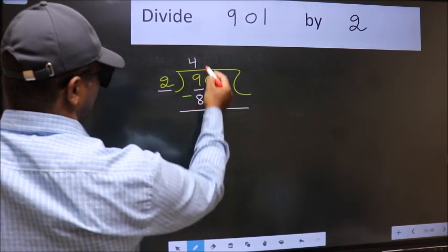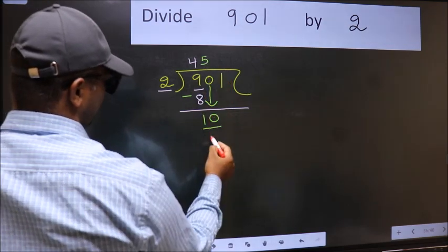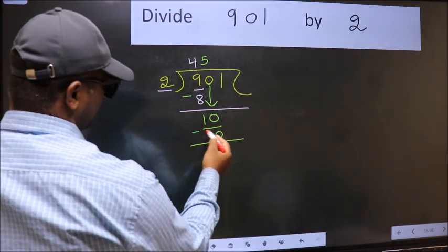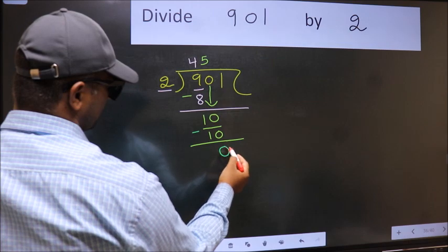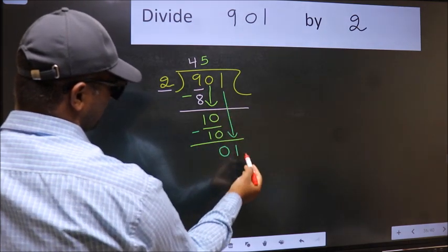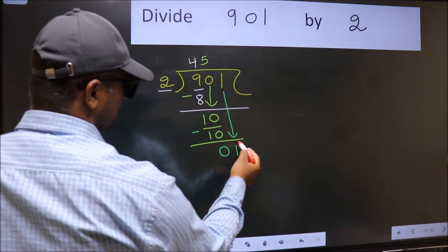When do we get 10 in 2 table? 2 fives, 10. Now we should subtract. 10 minus 10, 0. After this, bring down the beside number. So 1 down. After this step, the mistake happens.